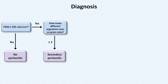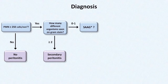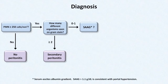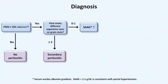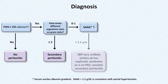If there are at least 250 PMNs, the next question is how many different organisms are seen on gram stain. If there are two or more organisms, it is highly likely the patient has secondary peritonitis — from, for example, a bowel perforation. If there are zero or just one bacterial species seen on gram stain, ask next: what is the SAAG? The SAAG, or serum-to-ascites albumin gradient, equals serum albumin minus ascites albumin. A SAAG greater than 1.1 g/dL indicates ascites from portal hypertension. Since SBP is rare outside of portal hypertension, a SAAG less than 1.1 makes SBP unlikely and you should consider secondary peritonitis instead.